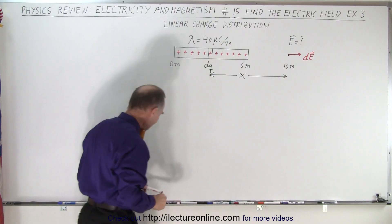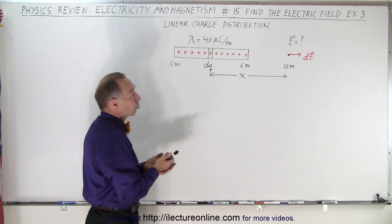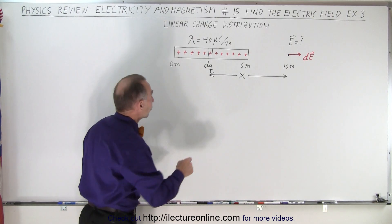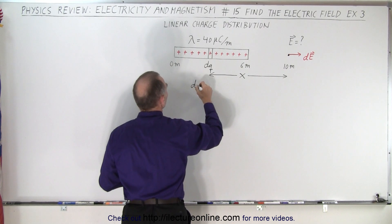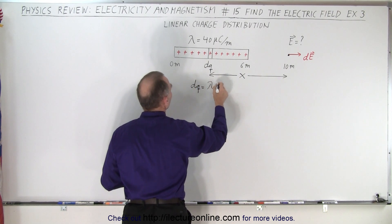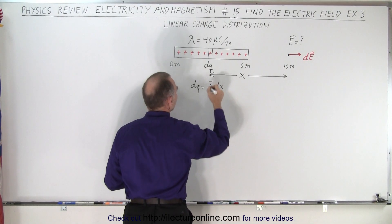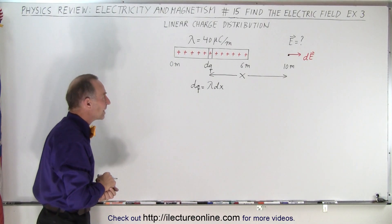Now dq, well how much charge is that? Well notice that we have a charge density, so that means that dq has to be equal to the charge density times the length of that little segment, which is going to be a small little dx, an infinitesimally small distance dx.